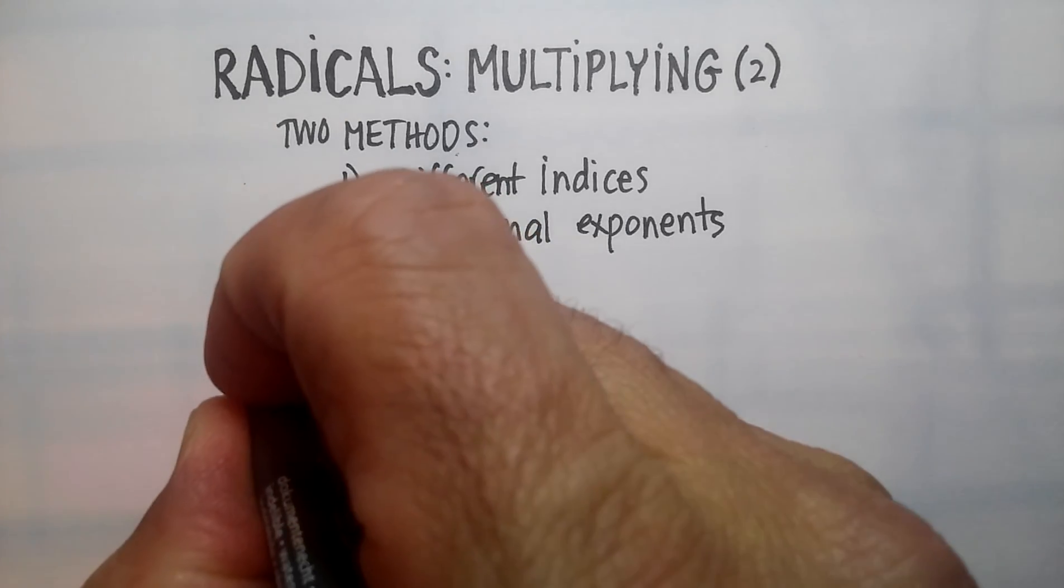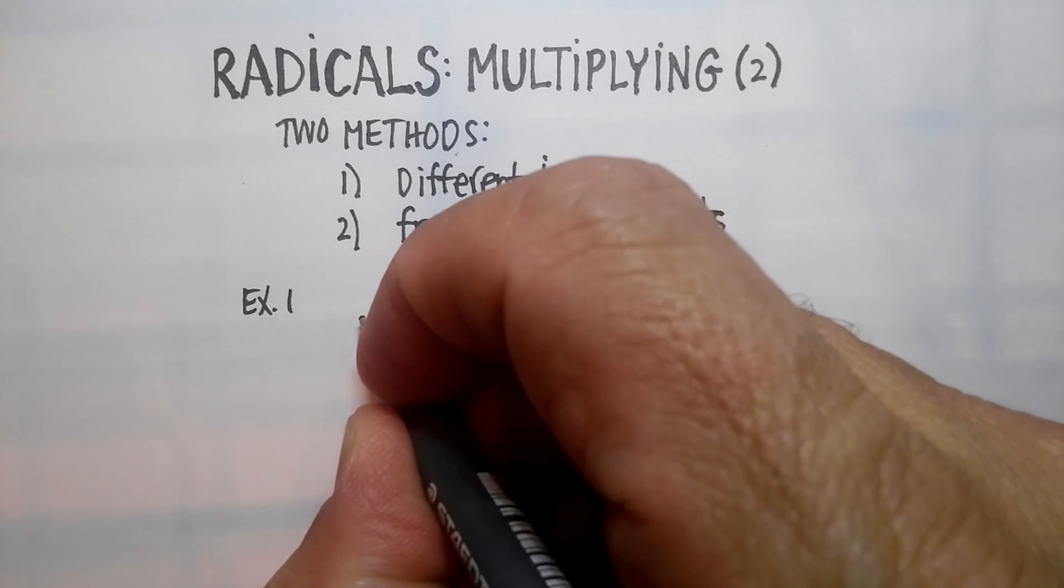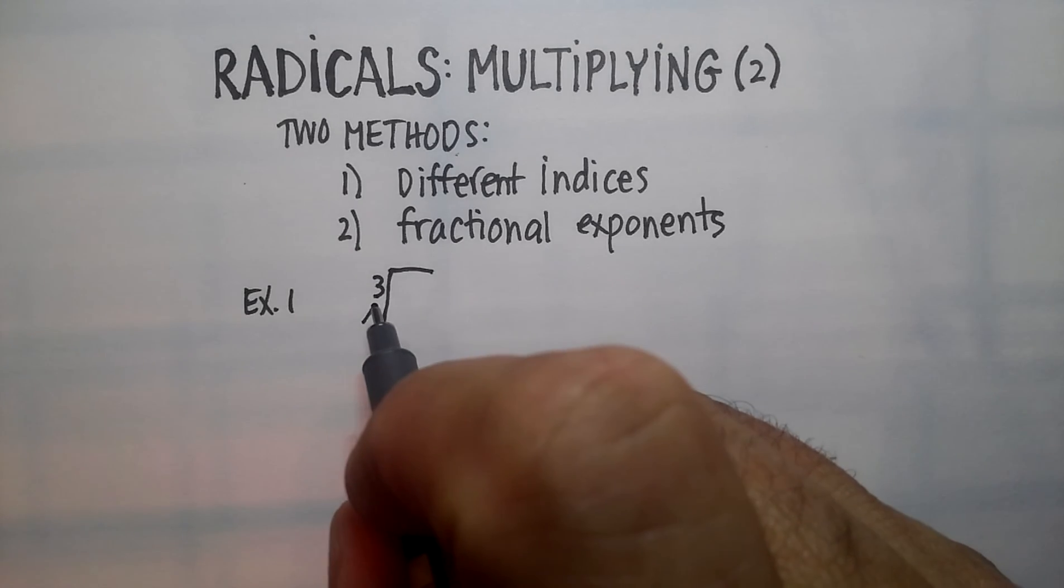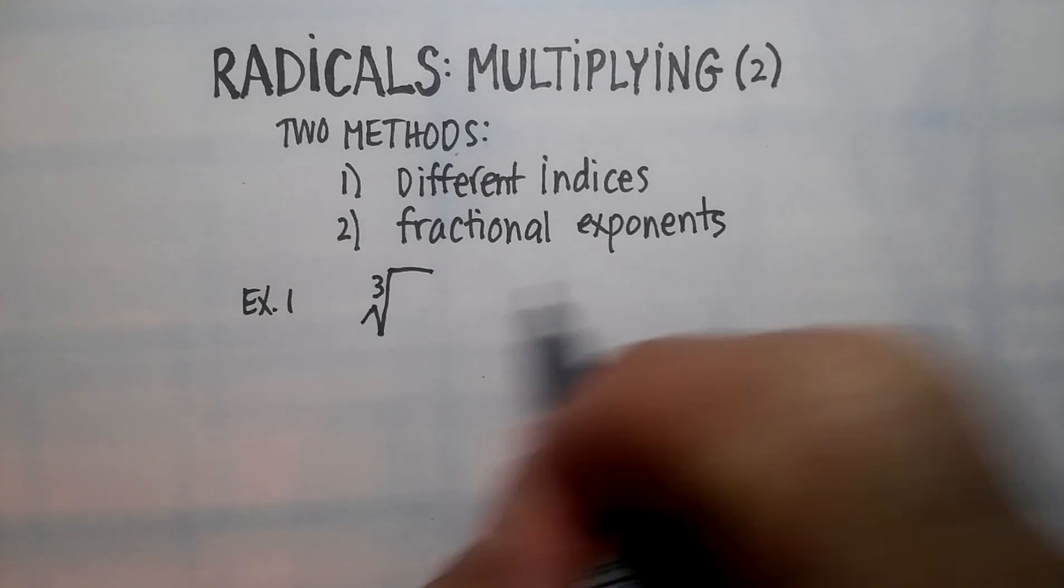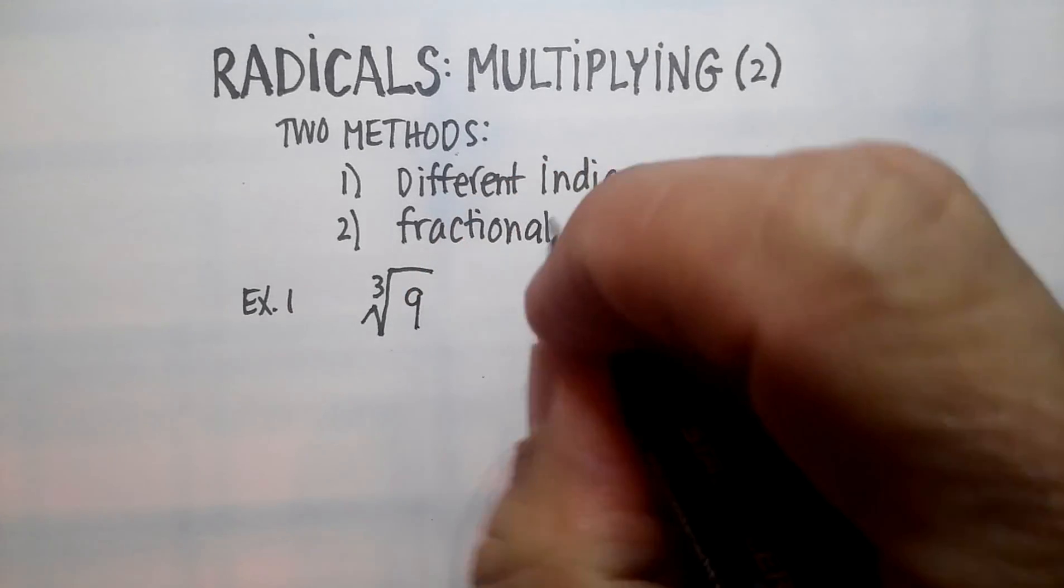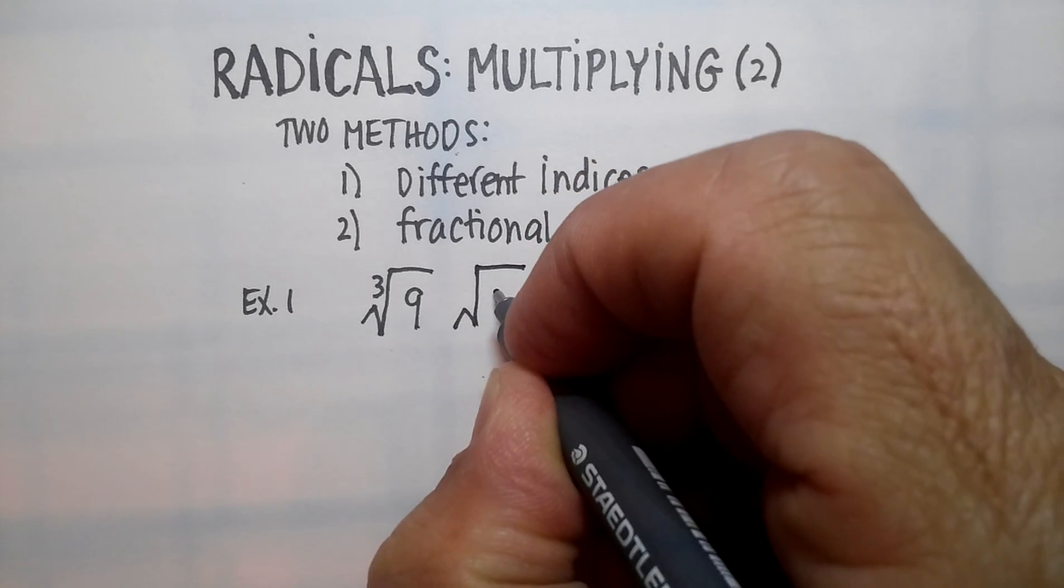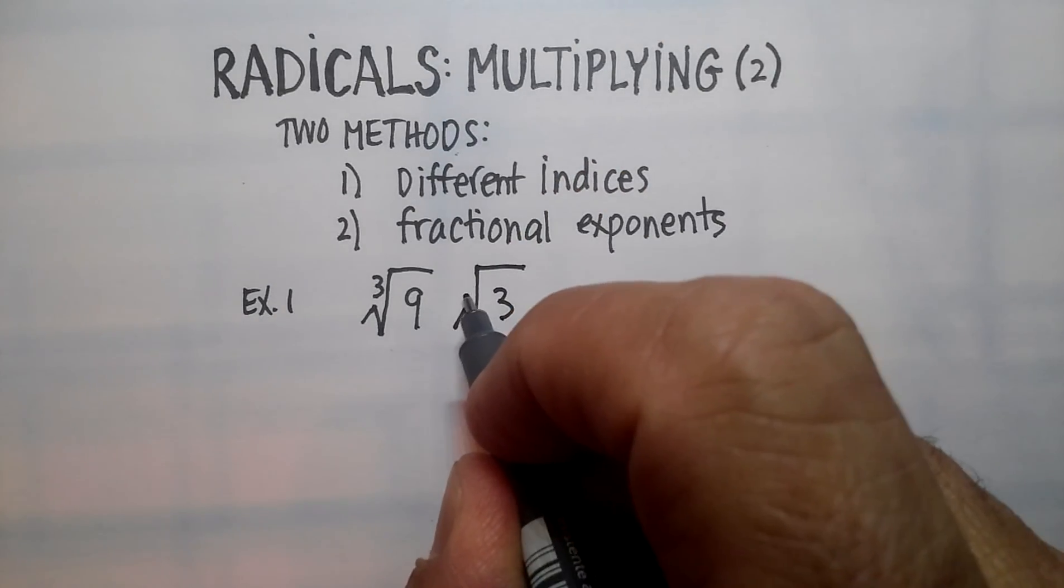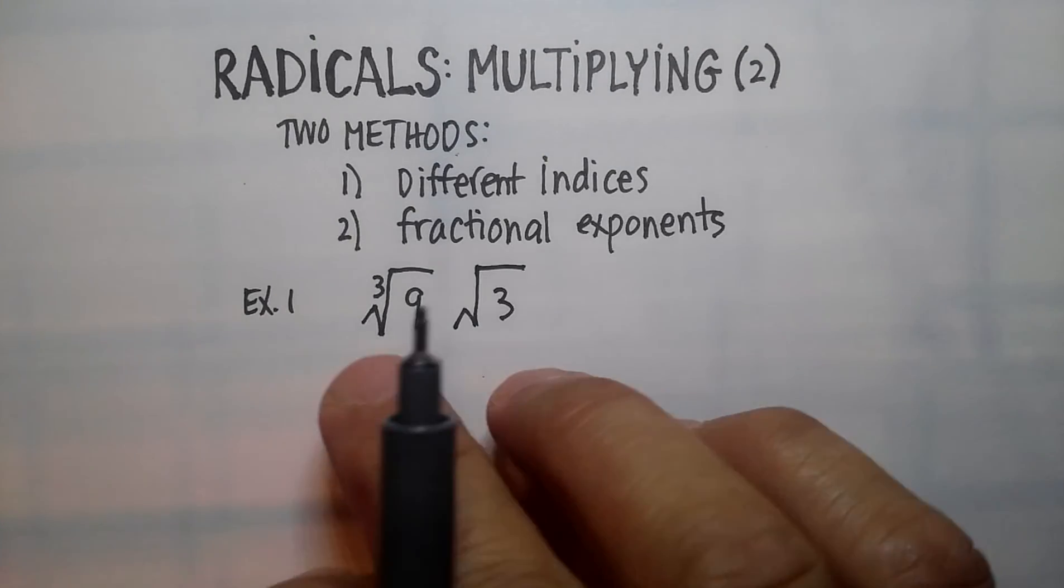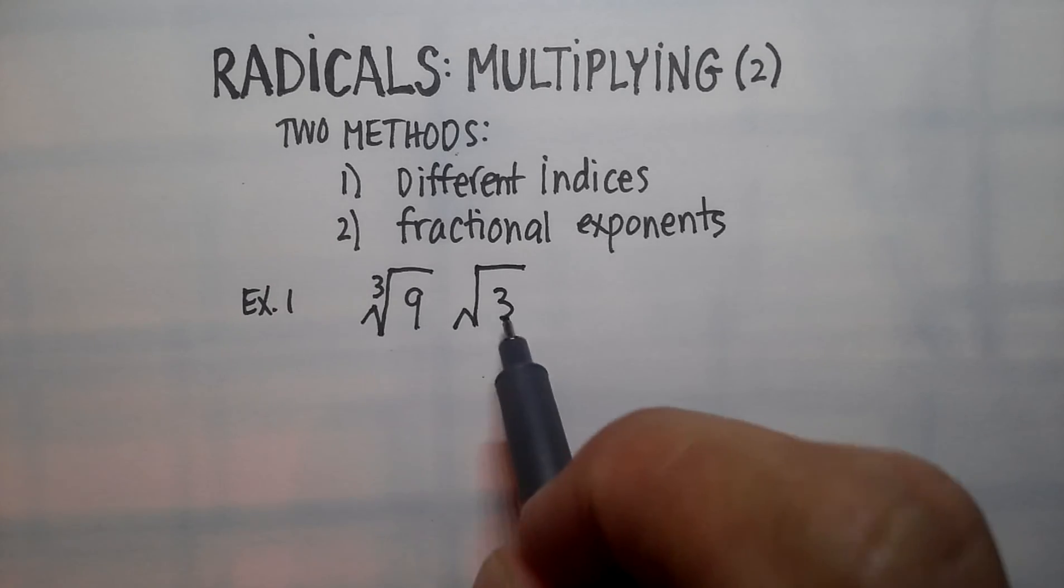Okay, now let me give you an example of what I mean by that. I'll call this example one. Let's say that I am multiplying the cube root, okay, so I put a three there where the index is, plurals, indices. Let's say I'm multiplying the cube root of nine times the square root of three. Okay, and remember the square root would have a two here. I usually don't put it in there, but we understand that there is a two.